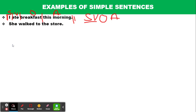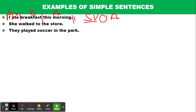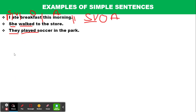Another example: 'She walked to the store.' 'They played soccer in the dark.' You can see a similar structure — each has one subject and one verb. Another example: 'The dog barked at the mailman.' Each of these sentences has a similar structure with one subject and one verb.